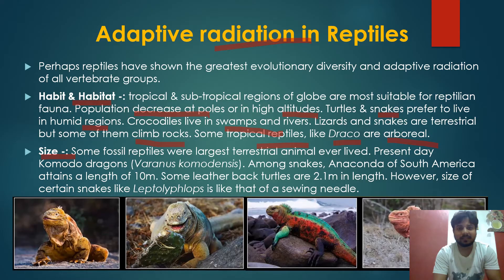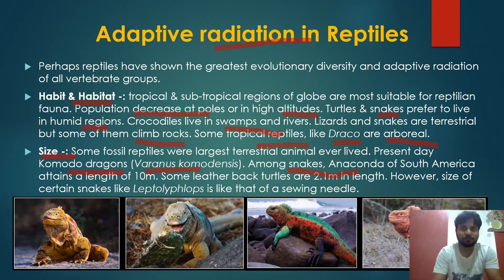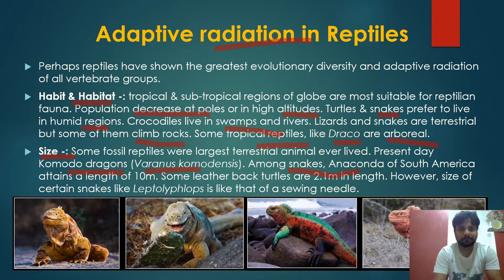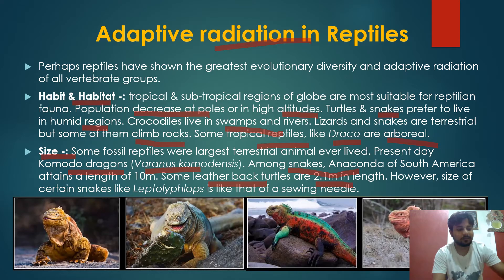Reptiles also show great variation in size — for example, the Komodo dragon among lizards, the anaconda among snakes, and the leatherback turtle which can reach 2.1 meters. This size variation is a form of adaptation and adaptive radiation.